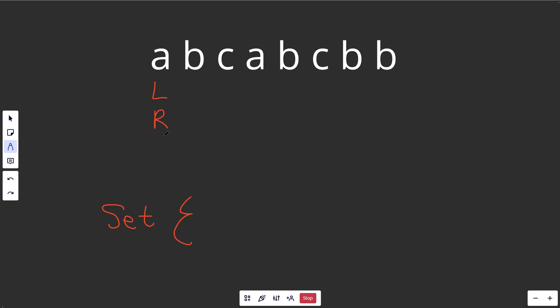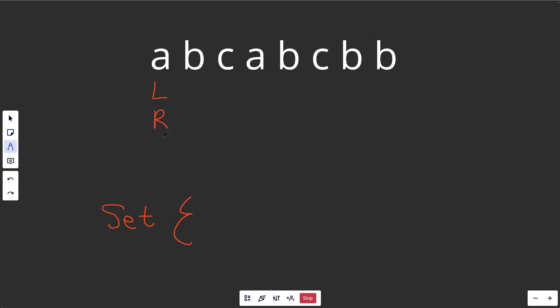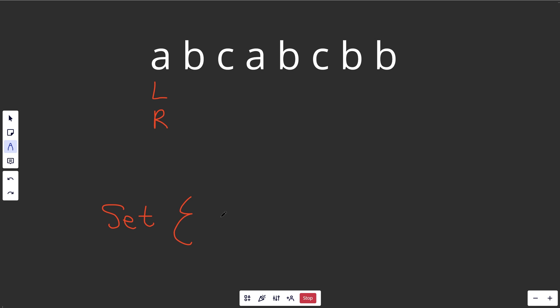We start both pointers at the beginning. For sliding window, you always ask: is our window valid? Let's always try to make it valid. By valid, we mean we don't have any duplicate characters in the substring. Well, we have no characters so far, so our window is valid. We will add R's character into the set. We've seen something, so we'll keep track of our longest length seen — probably initialized to zero, but now it's been updated to one.